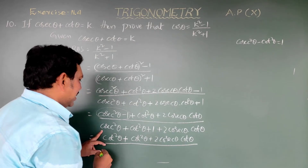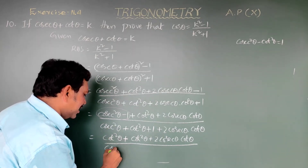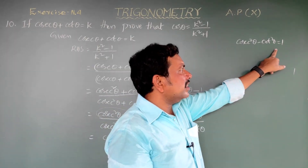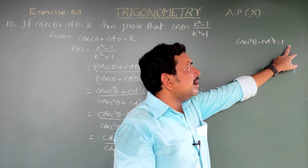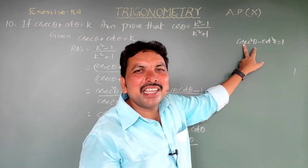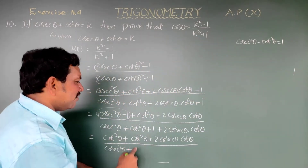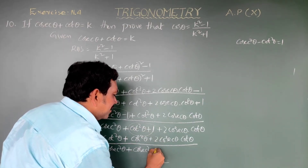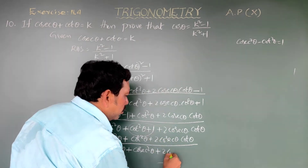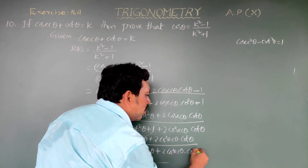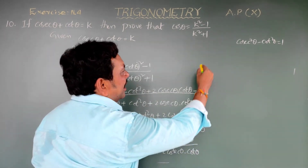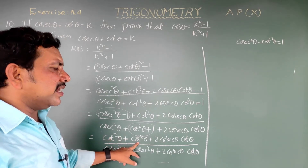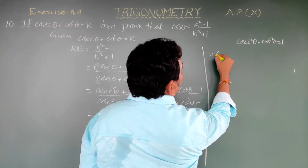In the denominator, using the identity: 1 plus cot square theta equals cosecant square theta. So in place of (cot square theta plus 1) in the denominator, write cosecant square theta. The denominator becomes cosecant square theta plus cosecant square theta plus 2 cosecant theta cot theta, which gives 2 cot square theta in the numerator and 2 cosecant square theta in the denominator.